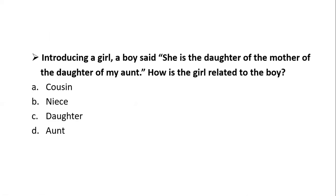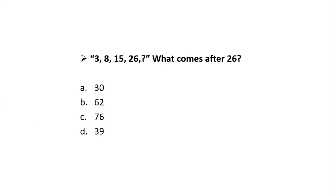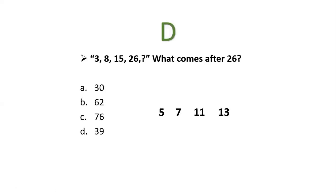Introducing a girl, a boy said she is the daughter of the mother of the daughter of my aunt. How is the girl related to the boy? The correct option is cousin. Now for the number-based logical reasoning question: 3, 8, 15, 26 — what comes after 26? The differences between consecutive numbers are 5, 7, 11 — these are prime numbers. The next prime number is 13, so adding 26 and 13 gives us 39. The correct option is D.